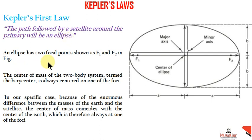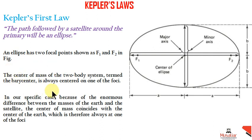For an ellipse, as you know, there are two focal points — the foci. I will explain this in the video. In a two-body system, the focal points correspond to the center of mass. In our case, because of the enormous difference between the masses of the Earth and the satellite, the center of mass is effectively the center of the Earth.